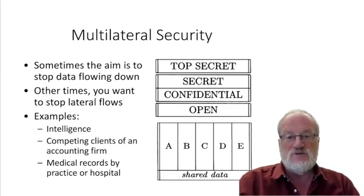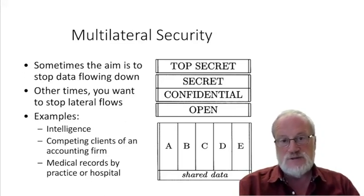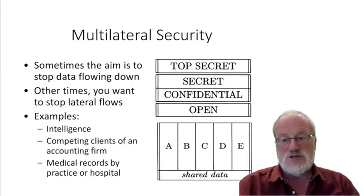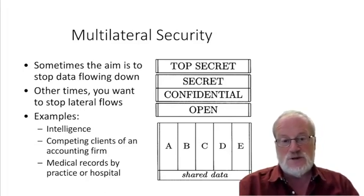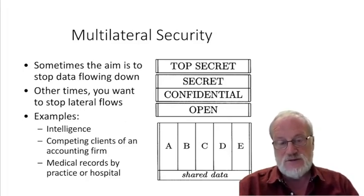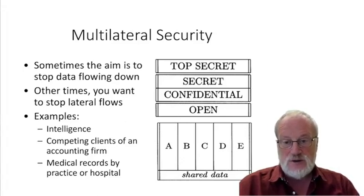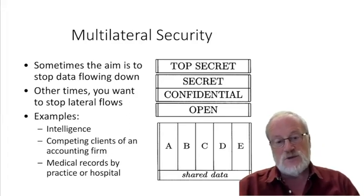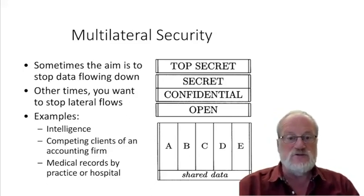That gives an overview of multi-level security. Now we turn to multilateral security. With multi-level security you're stopping information flowing from top secret down to confidential and open; but there are other cases where you want to stop information flowing between different compartments. In intelligence, analysts expert on China, Iran, Brazil, or South Africa should access reports from their area but not everything, because a disloyal analyst could blow the whole infrastructure.